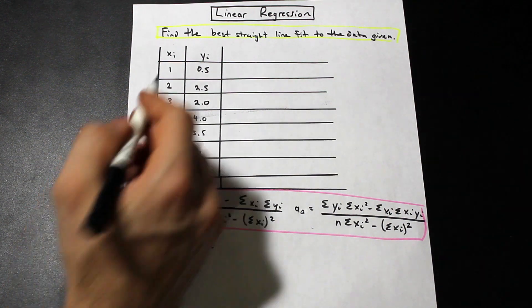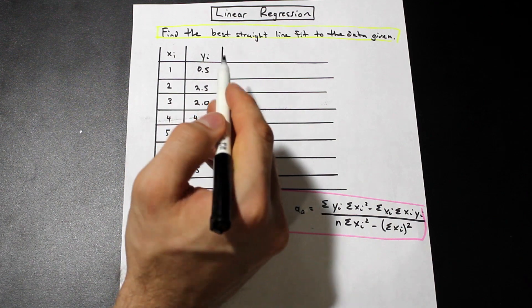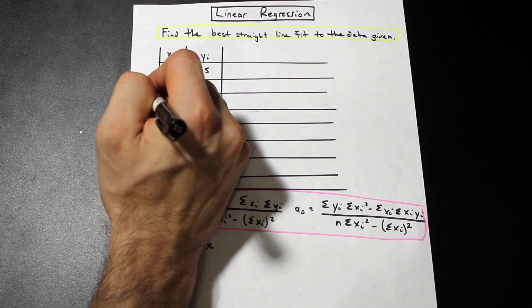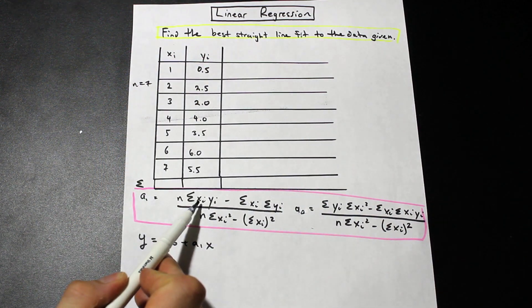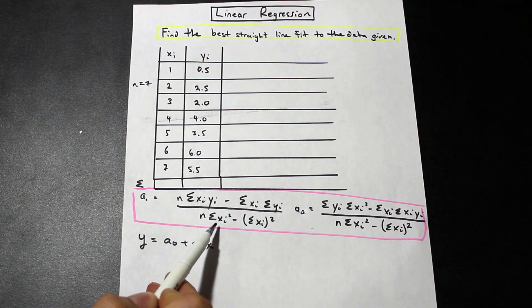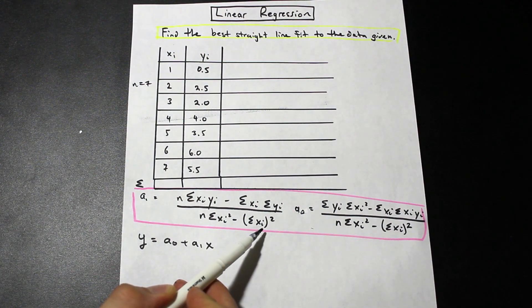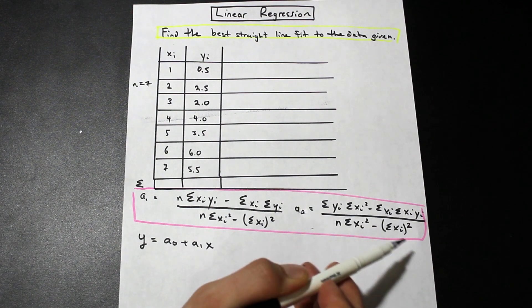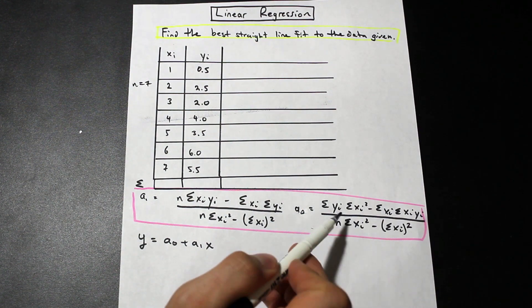We have n here, so n is the number of data pairs that we have. We have seven data pairs, so n equals seven. What else do we need? If we look over here, we're going to need the summation of xi and the summation of yi, as you can see here.